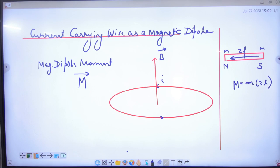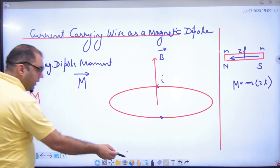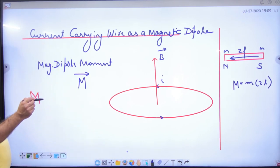So if a current carrying wire has a magnet and you want to find its dipole moment, remember that the dipole moment is different from the bar magnet. What is the way?